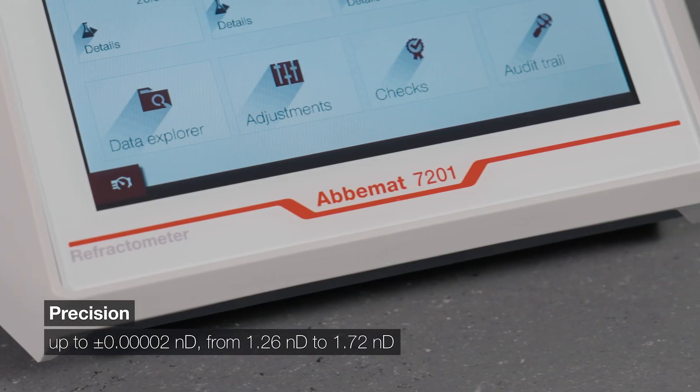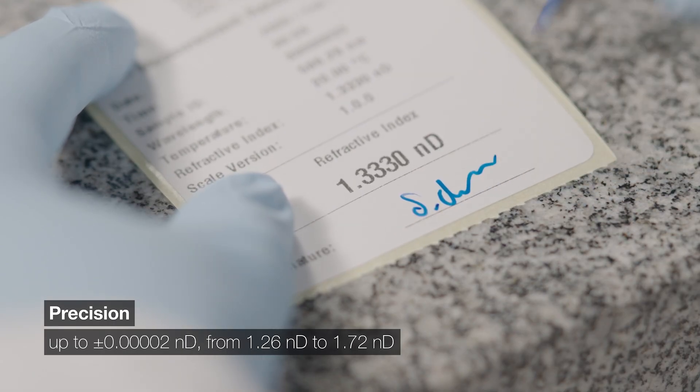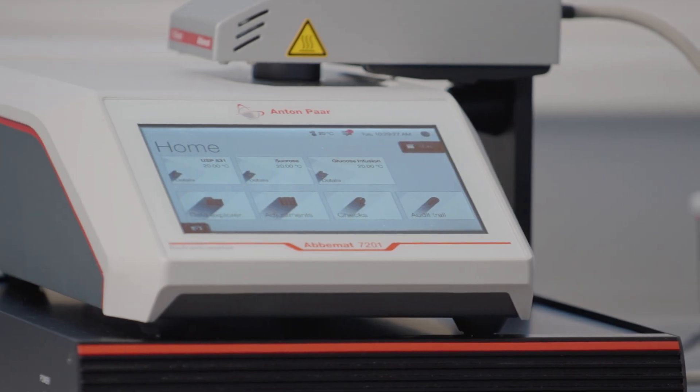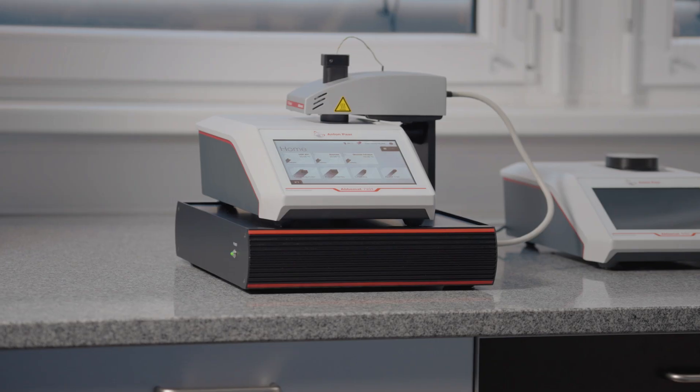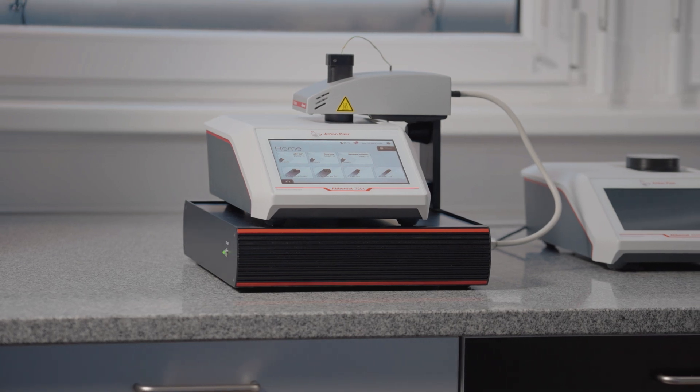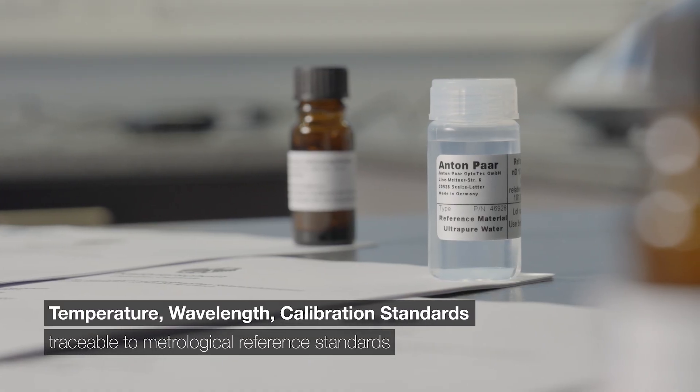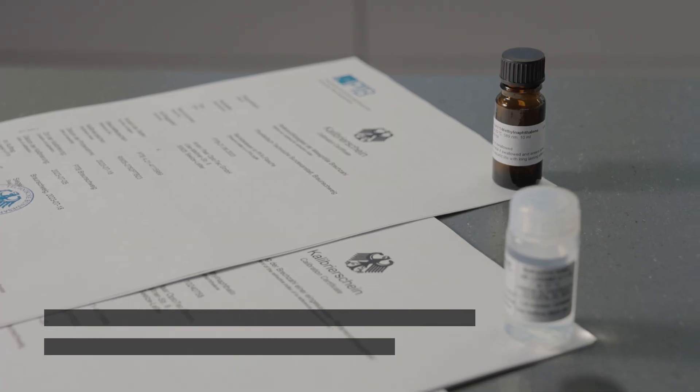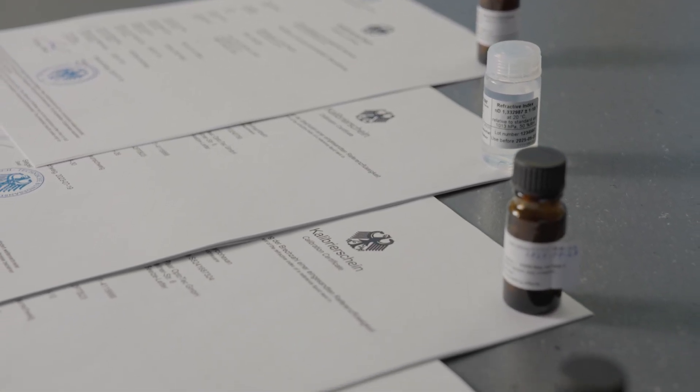We know you need precision you can rely on, day after day, without any compromises. That's why we check all our Abiumat Refractometers before they leave the factory for temperature accuracy with a patented Anton Parr T-Check. We also individually tune the wavelength of the light source and adjust each Abiumat with the world's most precise calibration substances from the renowned PTB.